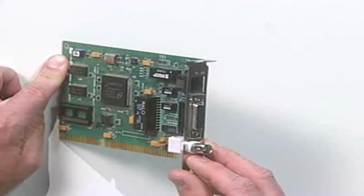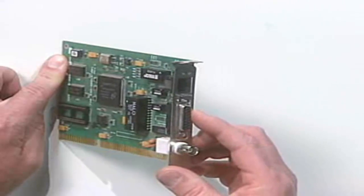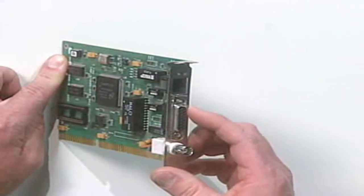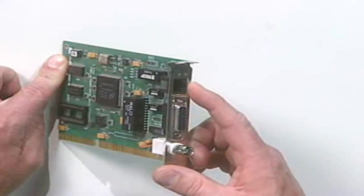This connector down here is for a 10-base-2 Ethernet network. This connector is for a 10-base-5 Ethernet network. And this connector is for a twisted pair, in this case a 10-base-T Ethernet network.